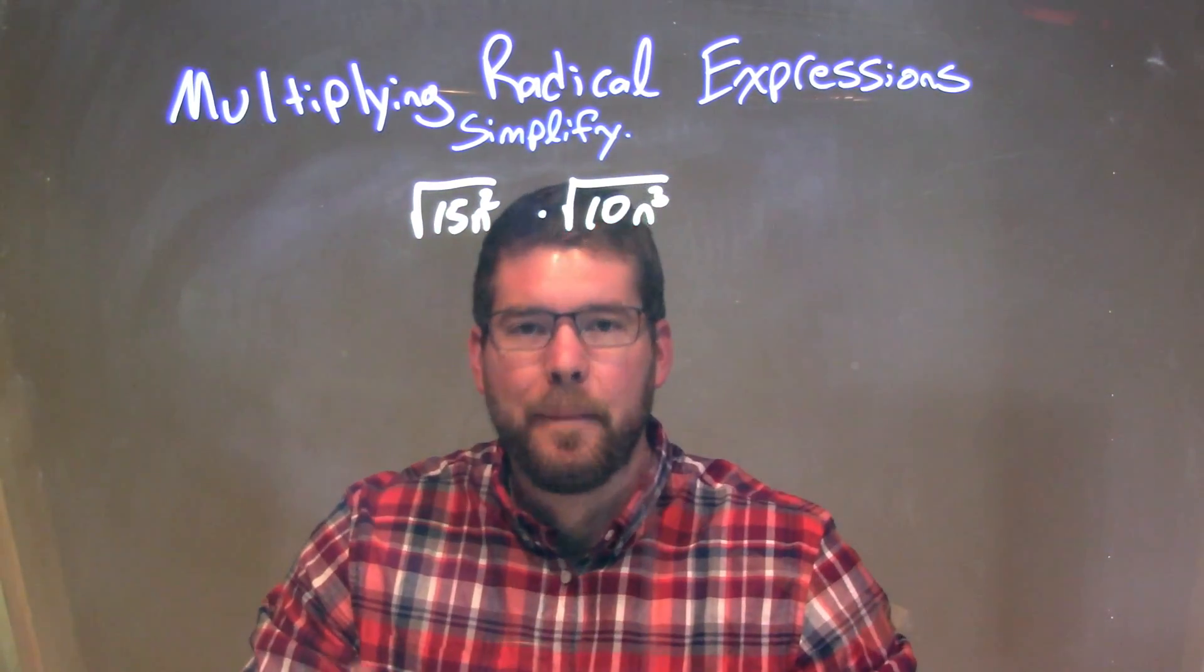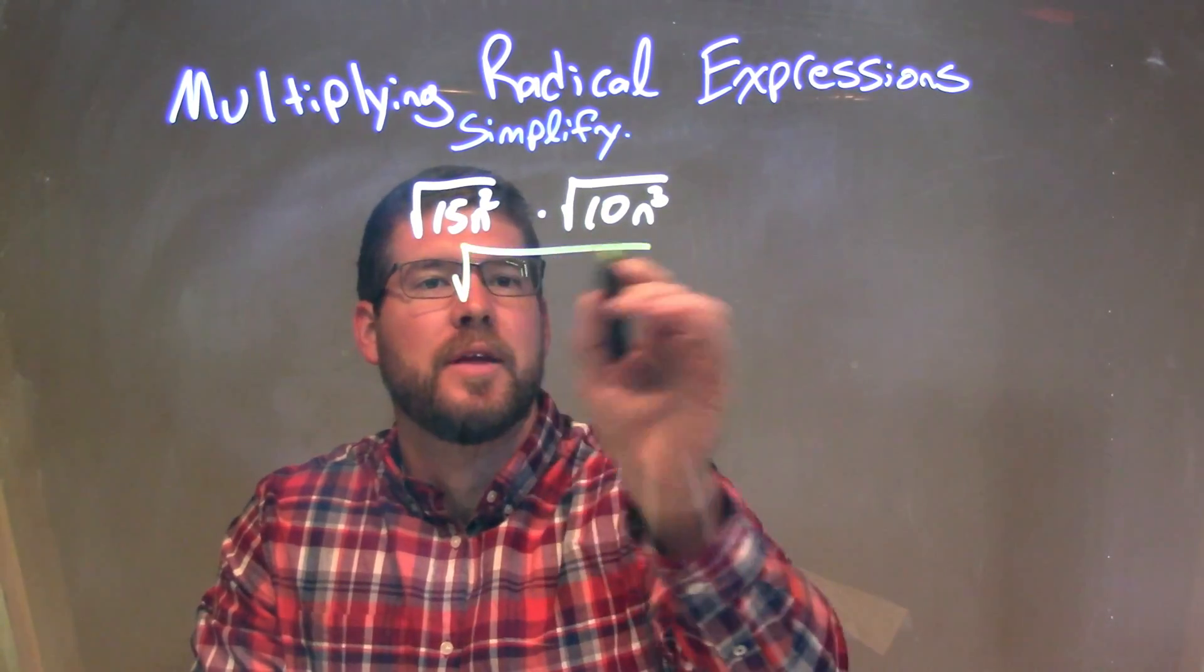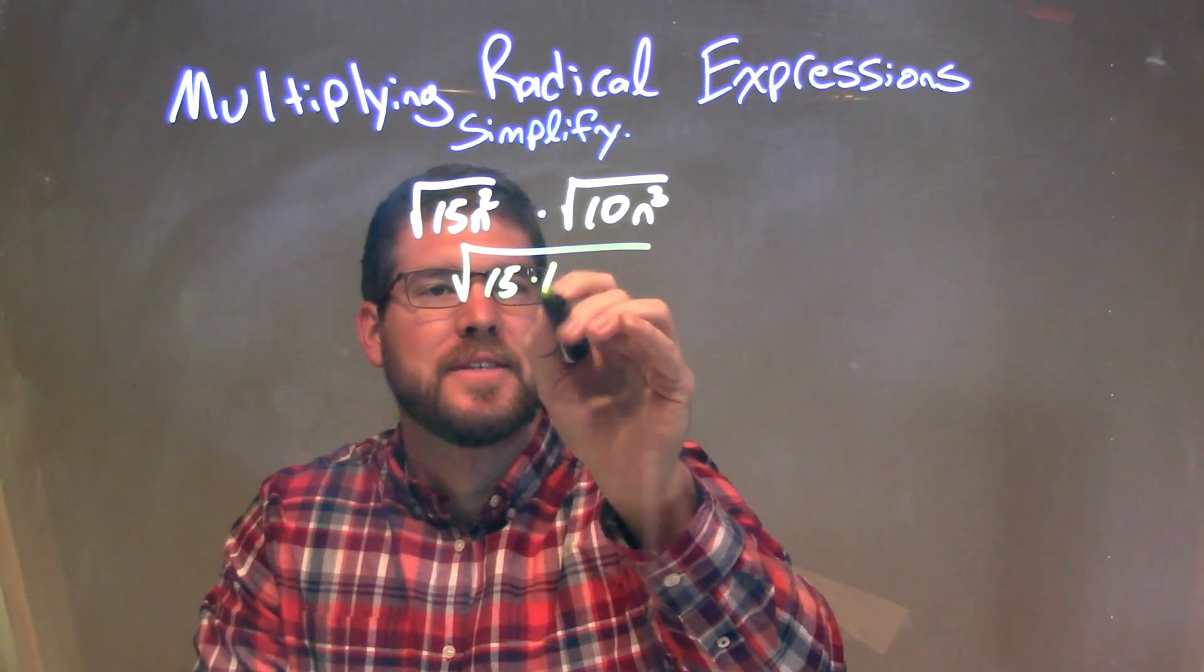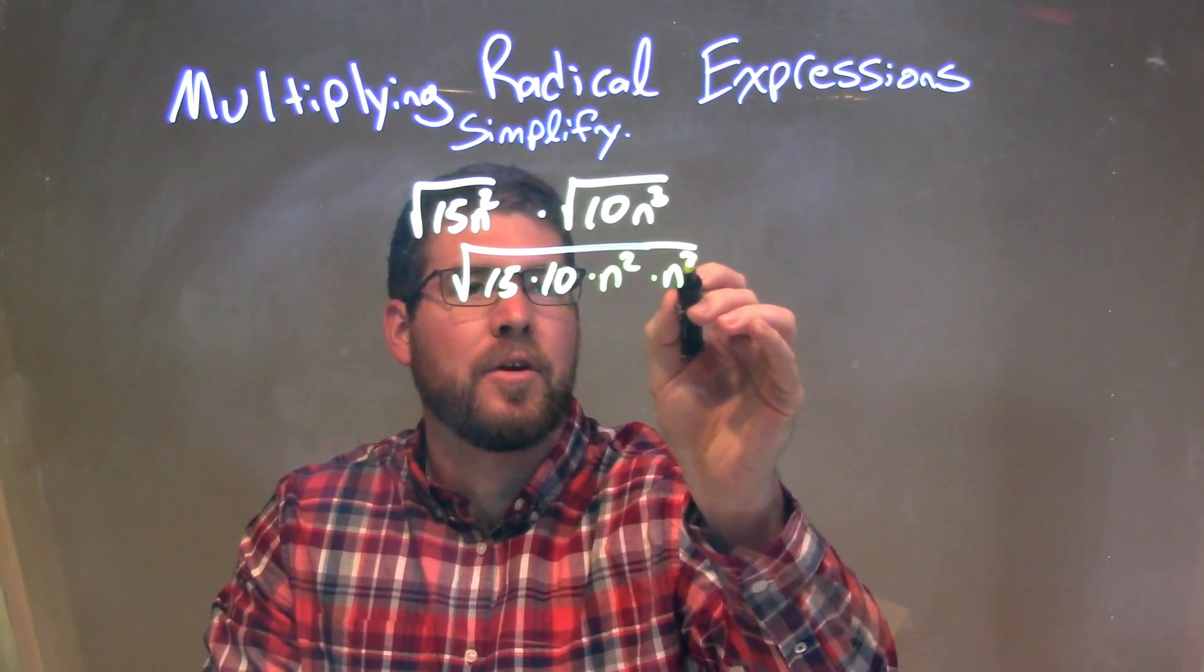We can combine this under one big square root, so that's what I'm actually going to do. The square root of 15 times 10, next to each other, then times the n squared times the n to the third.